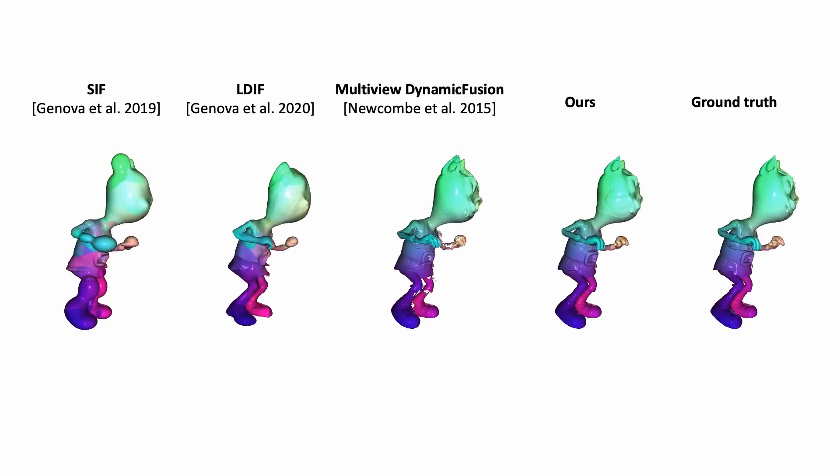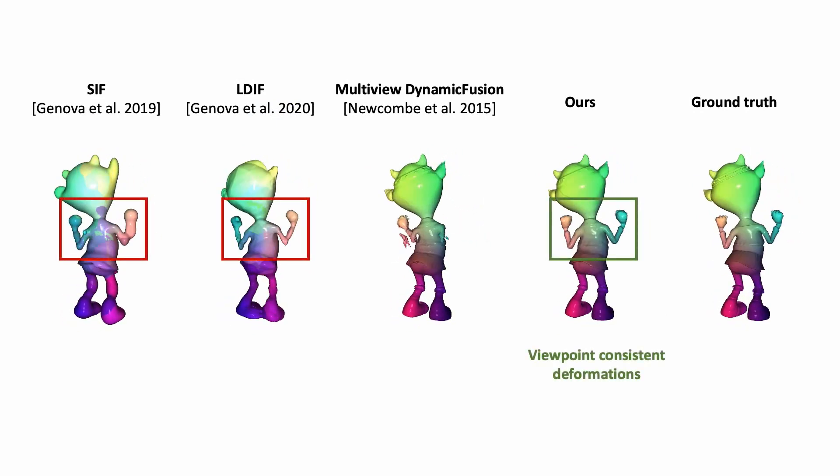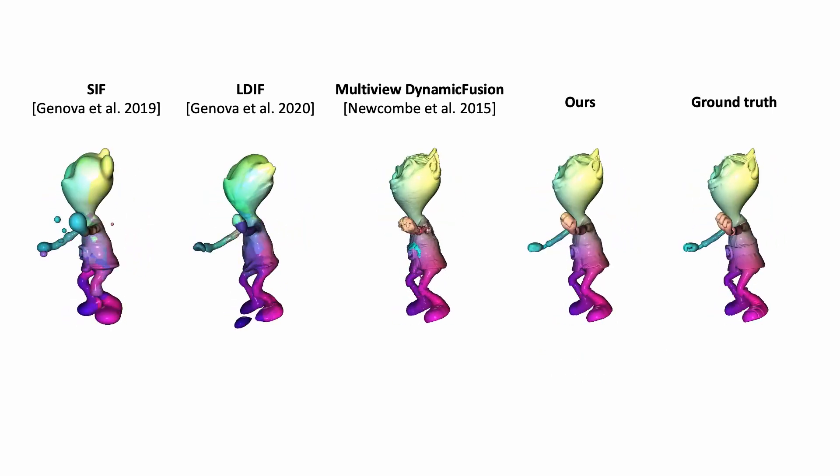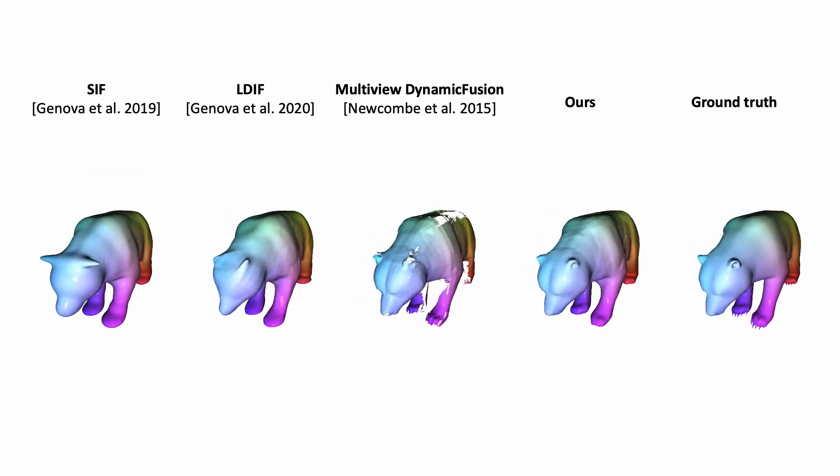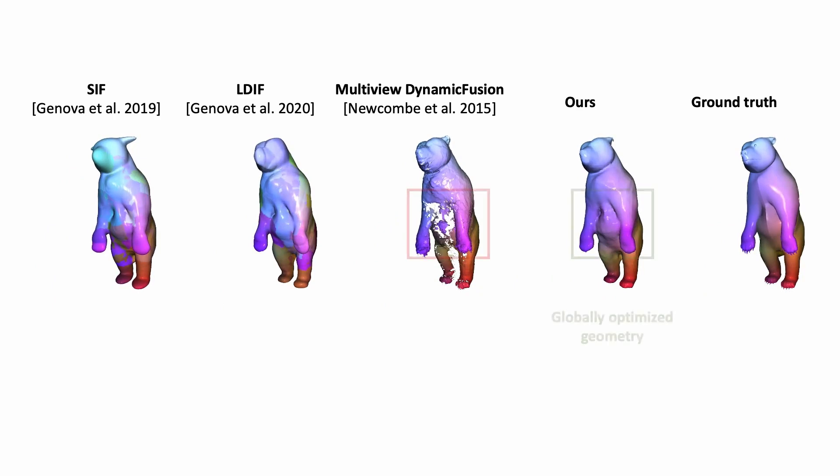In contrast to the other methods, our approach has explicit losses on global consistency, resulting in viewpoint-consistent reconstruction and tracking. Using all available frames, we reconstruct complete surfaces for all frames of the sequence.